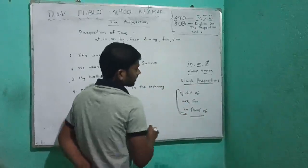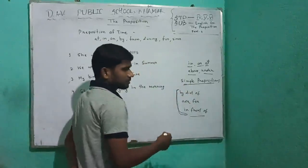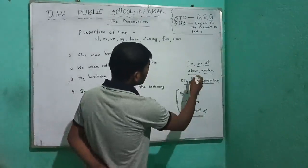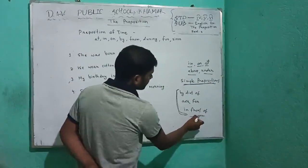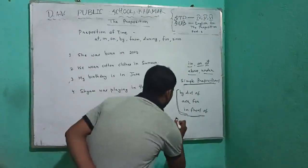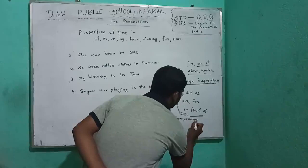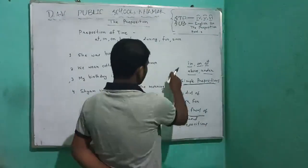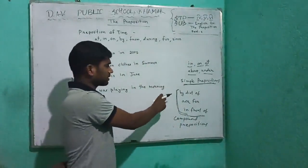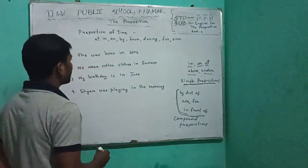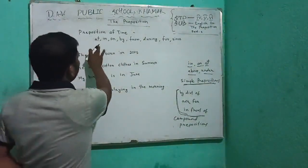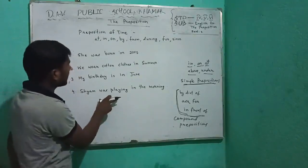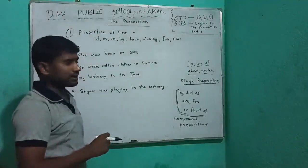Generally, on the basis of their formation, we have two types of prepositions: simple prepositions and compound prepositions. We will learn more about these types later. Now let us discuss the different types of prepositions based on their use. We have divided them into seven types, and the first type is prepositions of time.